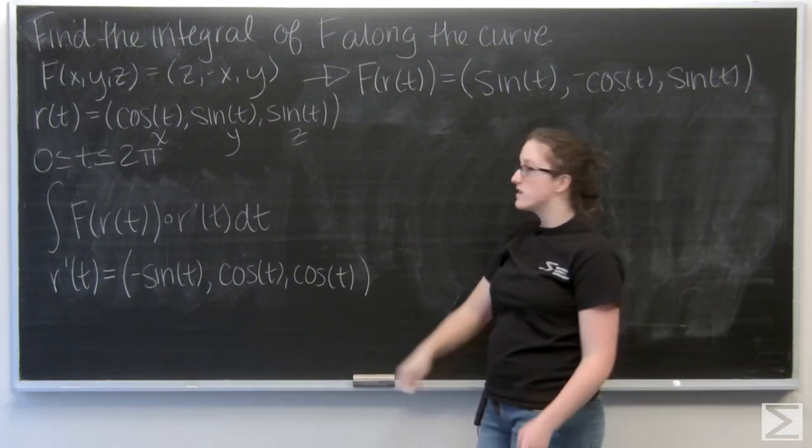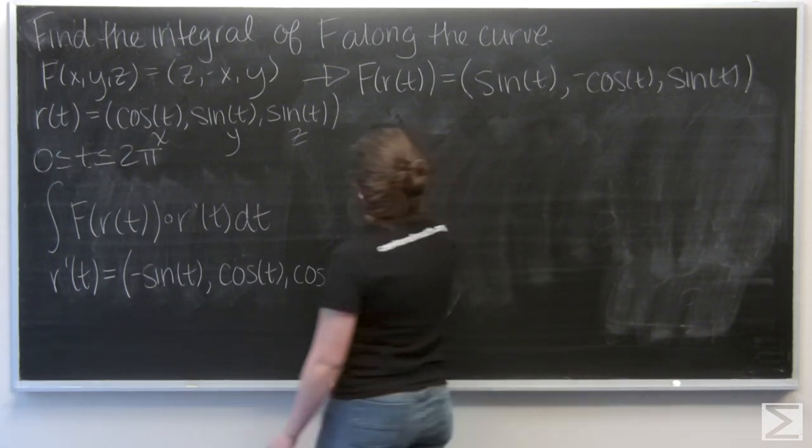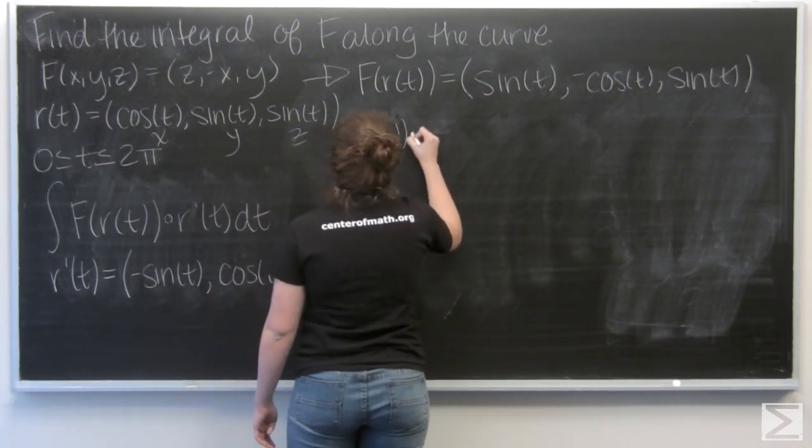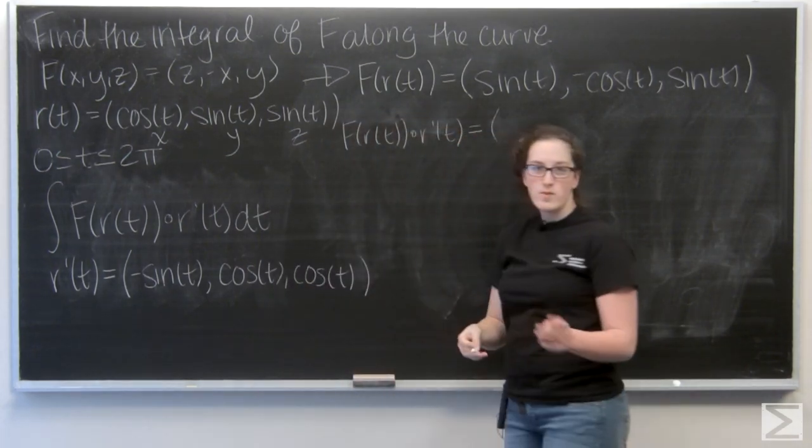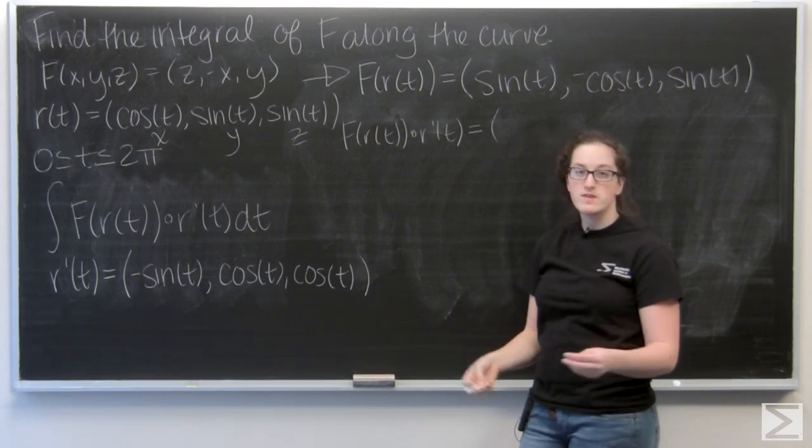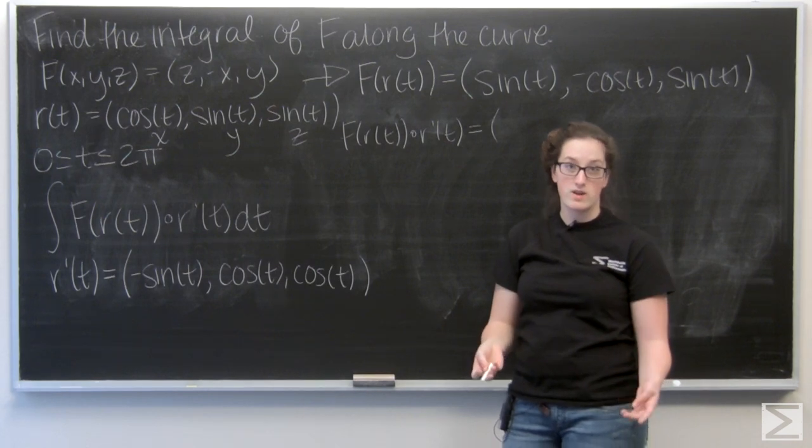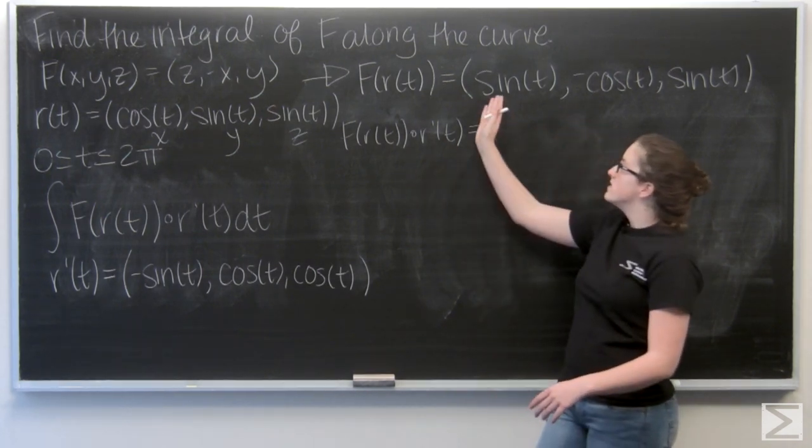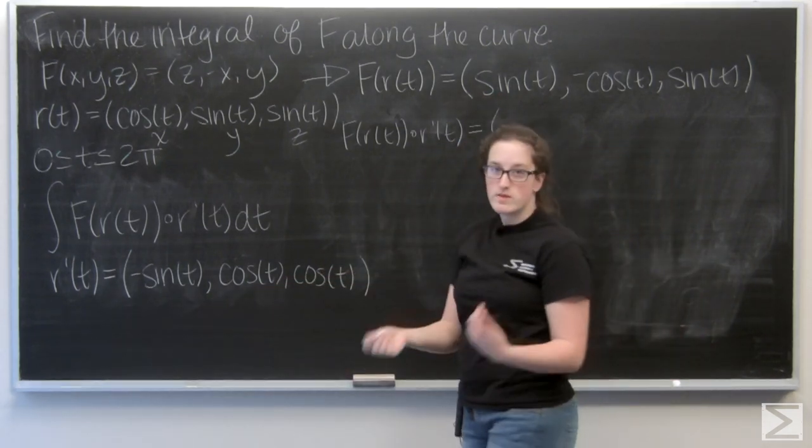Now let's go ahead and find that dot product with f of r of t and r prime of t. So to do that, remember, we just multiply the i components and then add them to the product of the j components plus the product of the k components. So first, I'm going to have sine of t times negative sine of t, so negative sine squared.